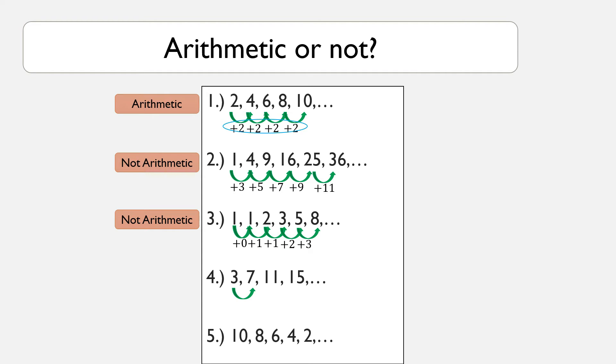For number 4, we have 3, 7, 11, and 15. From 3 to 7, it's increased by 4. 7 to 11 is increased by 4 also. 11 to 15, also plus 4. We have a constant or common difference, which is 4. Therefore, the 4th item is arithmetic.